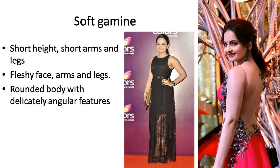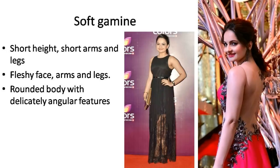Next is Soft Gamine. Short height, short arms and legs. You have a fleshy face, arms, and legs — your face is very plump and fleshy. The features of your face are small and delicate.